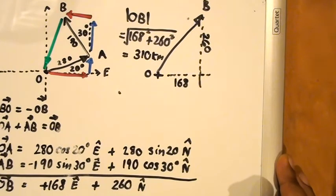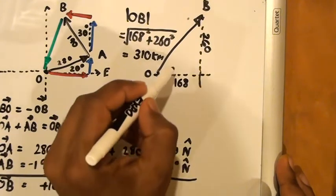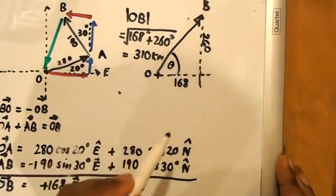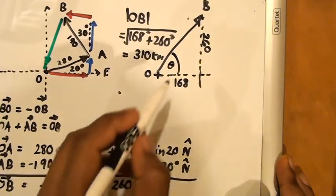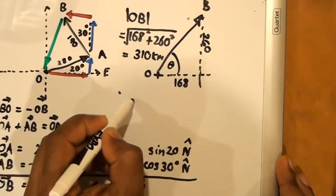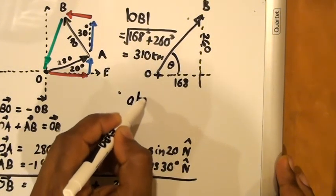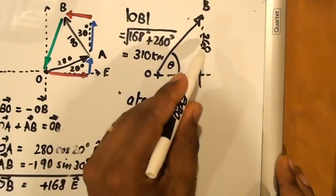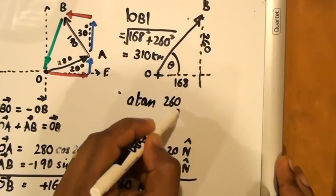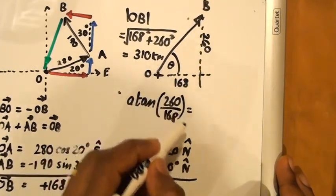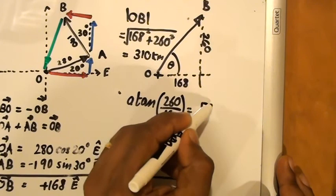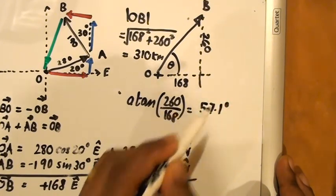The other thing we need to find is the direction of OB, and we can do that by finding this angle. That angle may be found by using arctan. Arctan of 260 over 168 gives us the angle theta, which turns out to be 57.1 degrees.